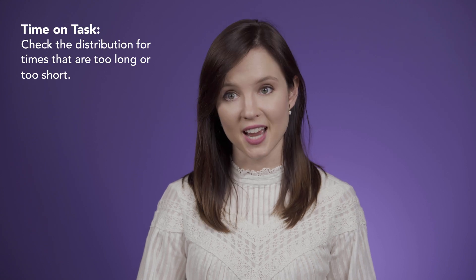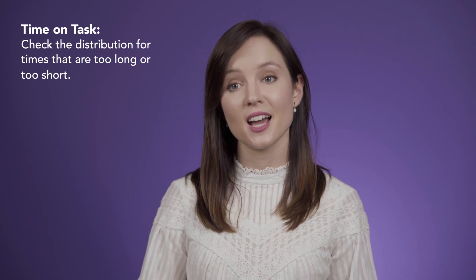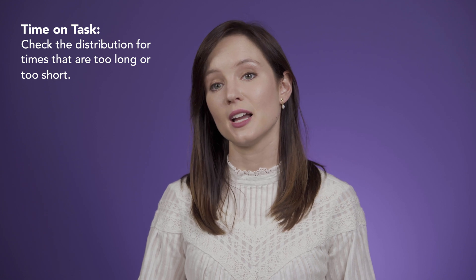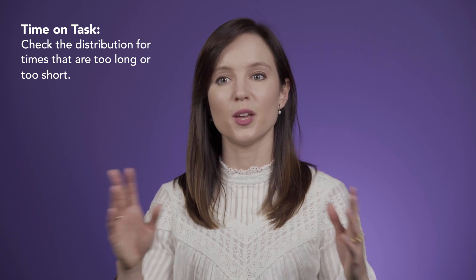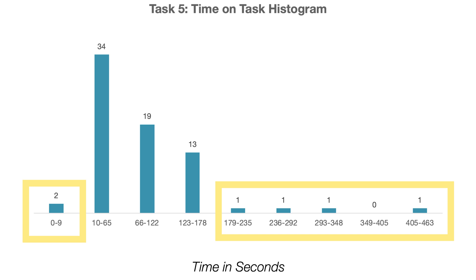Most quantitative usability studies involve collecting time on task and task success. With time on task, we can look at the distribution of times and see if there's anything that doesn't fit within the larger pattern of data. For example, let's look at this histogram of task times. The majority of participants took between 10 seconds and 178 seconds, but we have two participants who are much faster and four participants who are much slower.